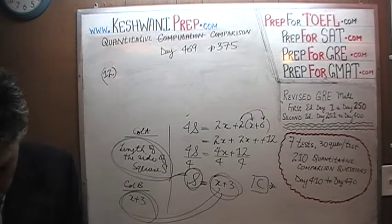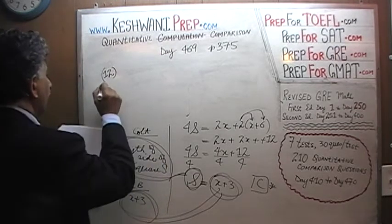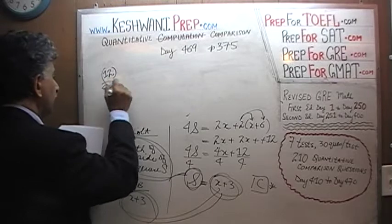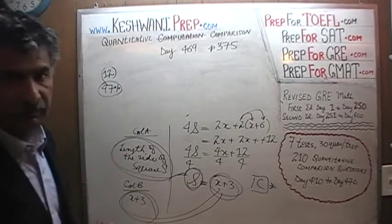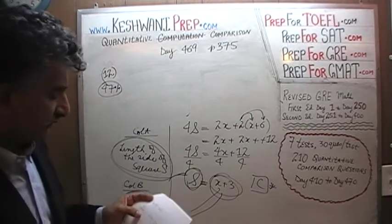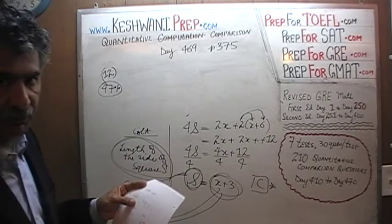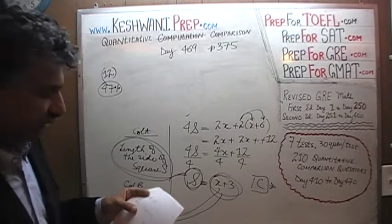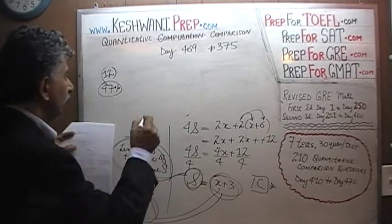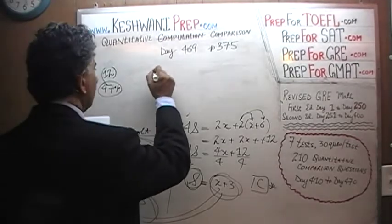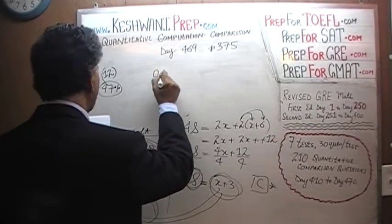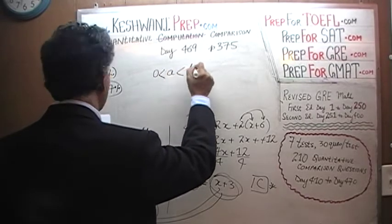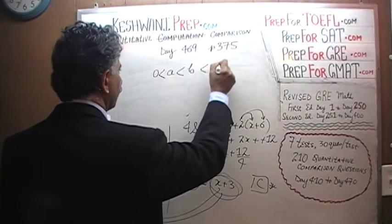Problem number 12. About half the people got it right — 47%, meaning 53% of the people who took this particular exam missed it. We are told that zero is less than A, which in turn is less than B, which in turn is less than C.